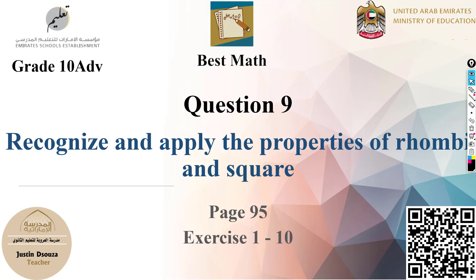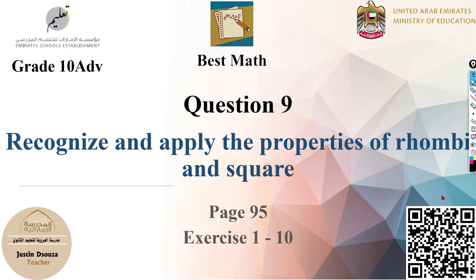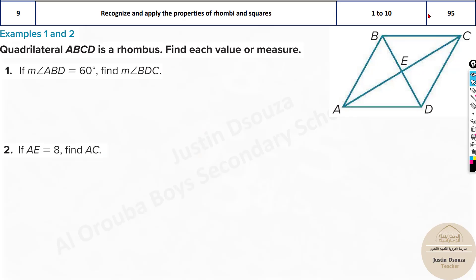Moving on to question number nine: recognize and apply the properties of rhombi and squares. Rhombi is the plural form of rhombus. We'll talk about a few of the properties and then look into the problems. This shape here is a rhombus — let's first realize what its properties are.